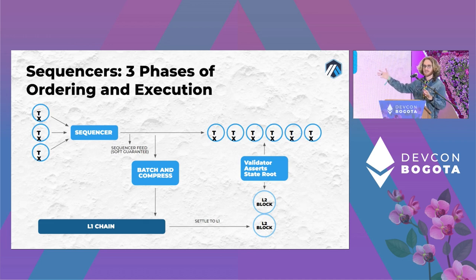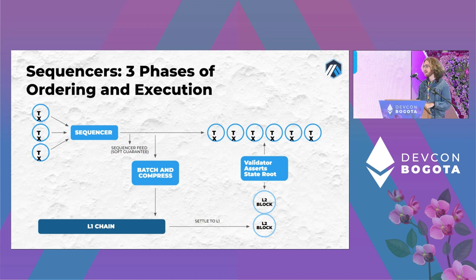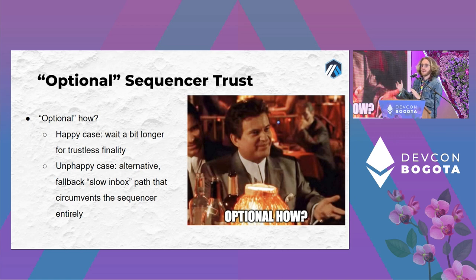The validator's explicit commitment to the final state happens later and doesn't involve the sequencer — there's no rush to do that, it's mainly so we can communicate back to layer one and process withdrawals. Once your data is on chain, you're done. This gives us a nice fast, low-latency transaction path that's trusted if you want it — but it's optional. If the sequencer gives you a fast promise, you can ignore it and simply wait for it to post on-chain.